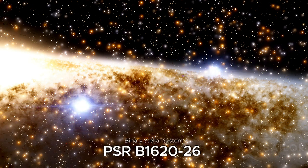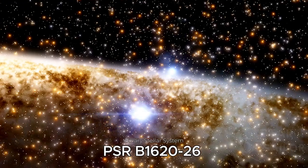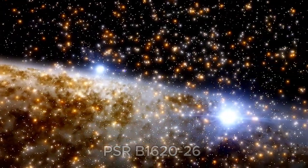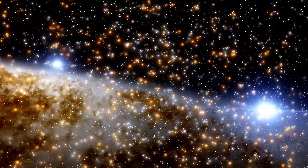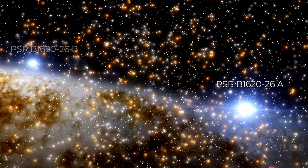Besides residing in an incredible star cluster, Methuselah orbits a fascinating binary star system, consisting of a dense white dwarf and an exotic pulsar, called PSR 1620-26 A and B.